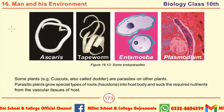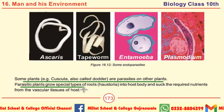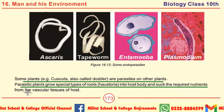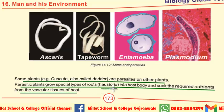A very important short question: What is haustoria? Some plants — for example, cuscuta, also called dodder — are parasites on other plants. Parasitic plants grow special types of roots called haustoria into the host body and suck the required nutrients from the vascular tissue of the host. This is the definition of haustoria.